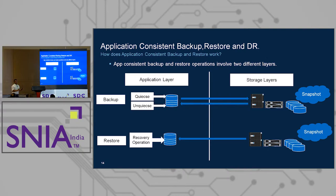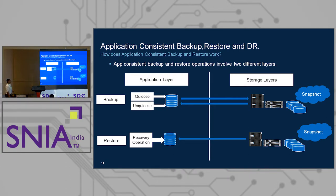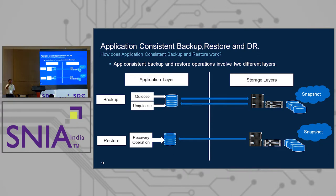The question is: how do we take an application consistent backup and restore for a containerized workload? For application consistent backup, there are two layers: the application layer and the storage layer. You quiesce the application, go to the storage layer to take a snapshot, come back to the application layer, then unquiesce it — allowing I/O to resume. For restore, you select the snapshot of choice, apply it on the storage, then come to the application and run recovery operations. The challenge is doing this for containerized workloads.